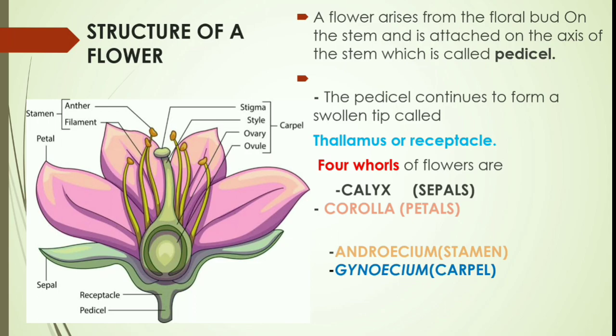There are four whorls of a flower: calyx, which is the sepal; corolla, which is the petals; androecium, which is the stamen or the male reproductive part; and gynoecium, which is the carpel — the female reproductive part of a flower.